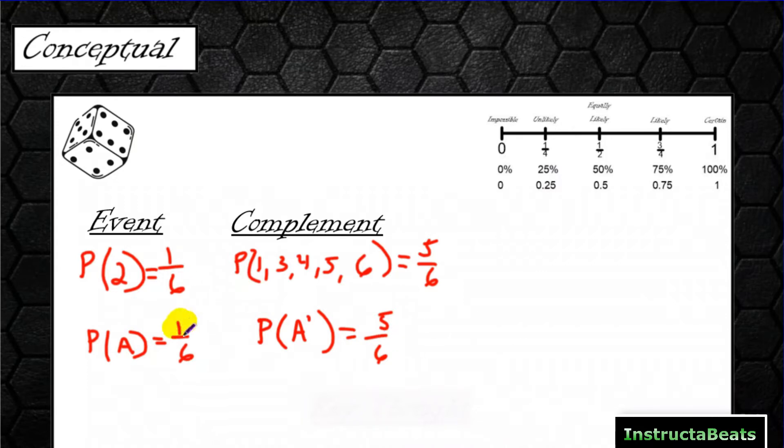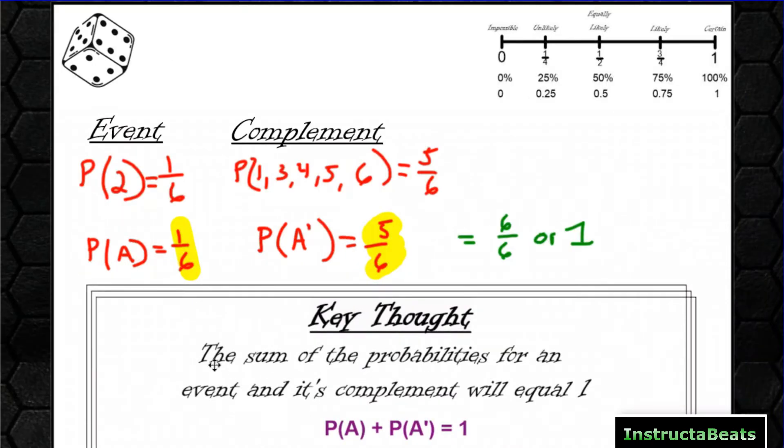Now, I want to take a second to highlight these fractions right here. What do you notice about these fractions? Hopefully, you notice that 1/6 plus 5/6 is going to give you 6/6, or one whole. That leads us to our key thought. The sum of the probabilities for an event and its complement will always equal 1. In other words, the probability of event A plus the probability of the complement of A, that's what that apostrophe next to it means, will always equal 1.